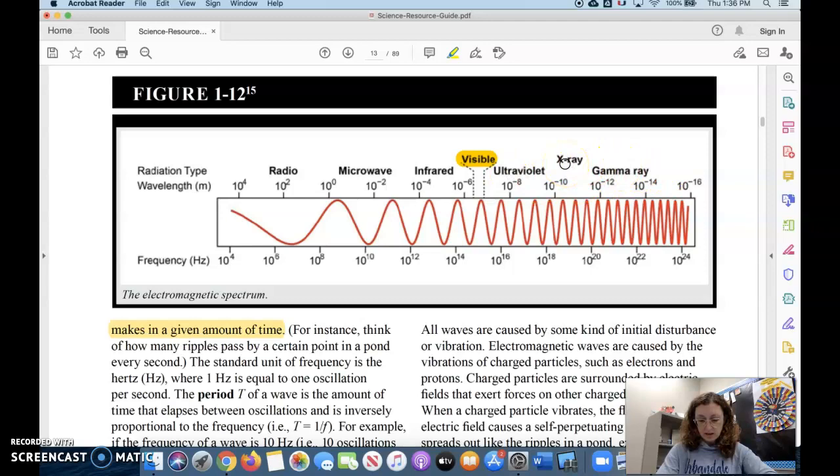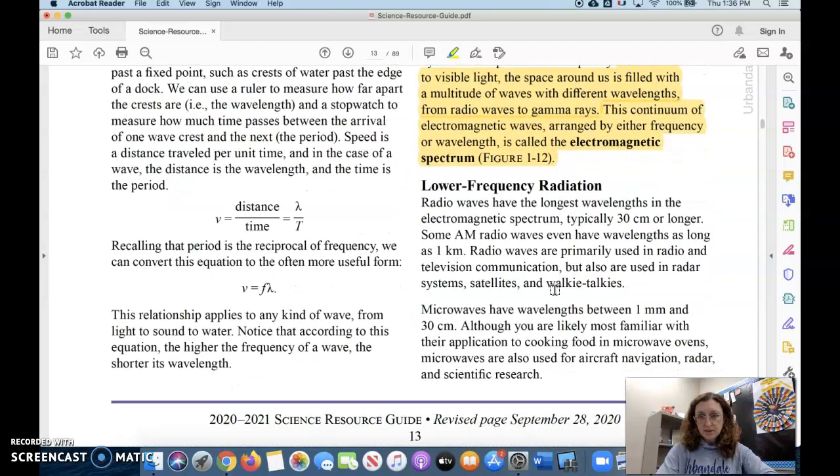So, we're going to start by talking about some of the lower frequency radiation kinds. Radio waves, microwaves. Yes, this is the kind of waves that's used in your microwave oven. Radio waves are the kind of waves that you have that create what you hear on the radio, on the actual radio.